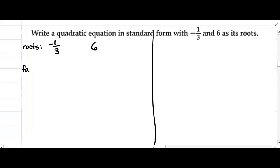Then the factors that go with these roots, we just change the sign: x - 6 and this one would be x + 1/3, because when I solve them by setting them equal to 0, I would get back to this answer.